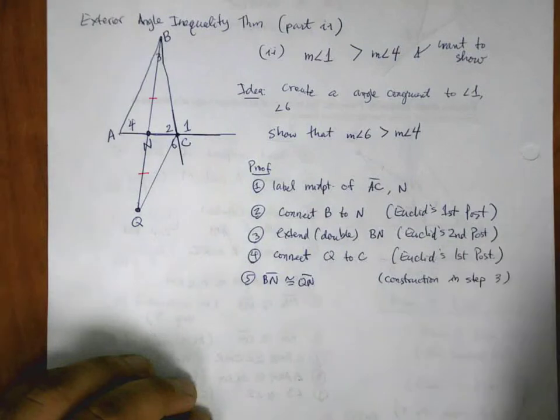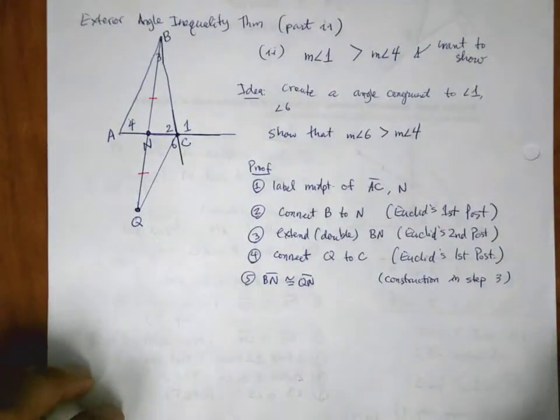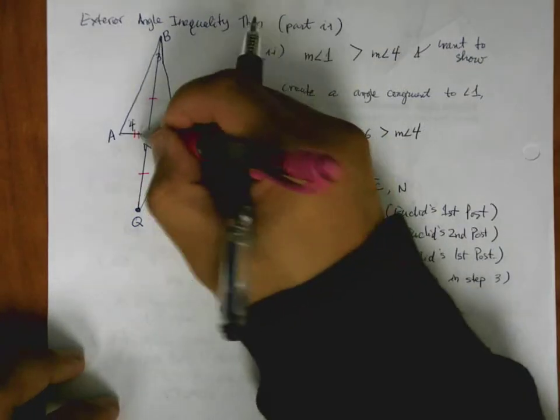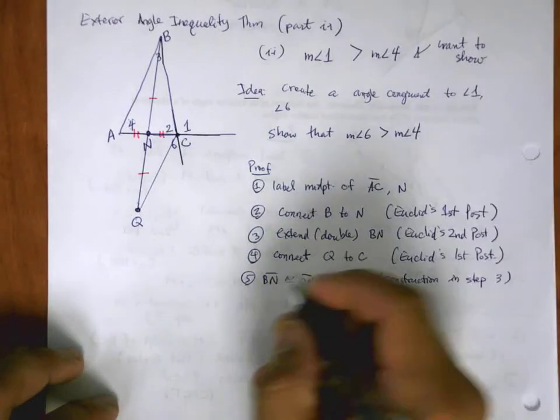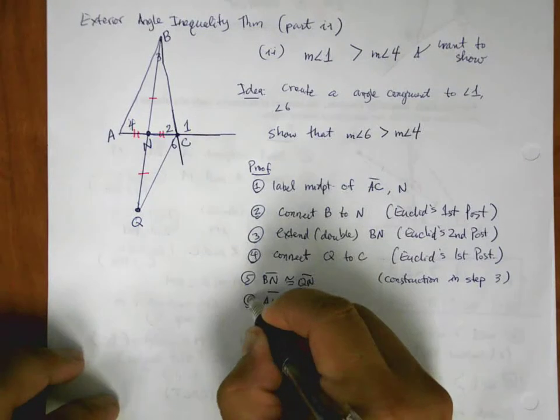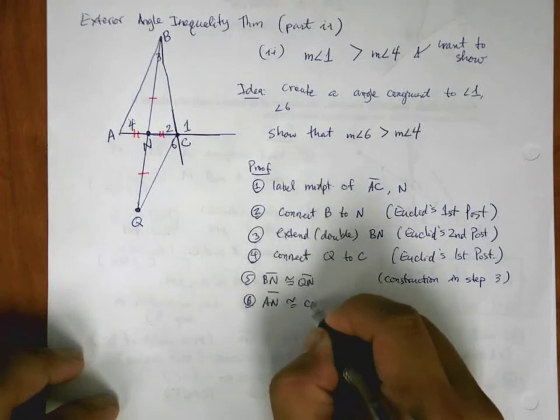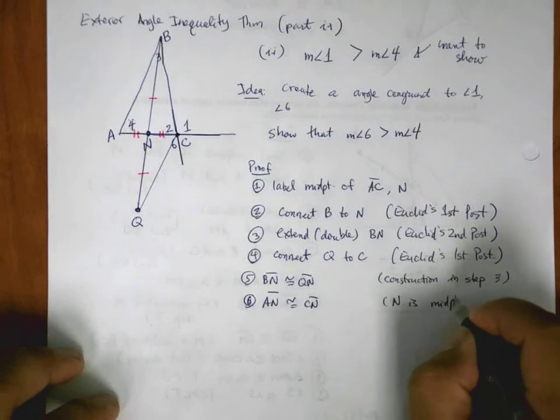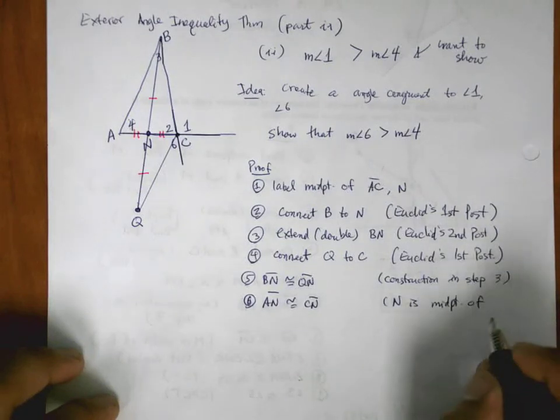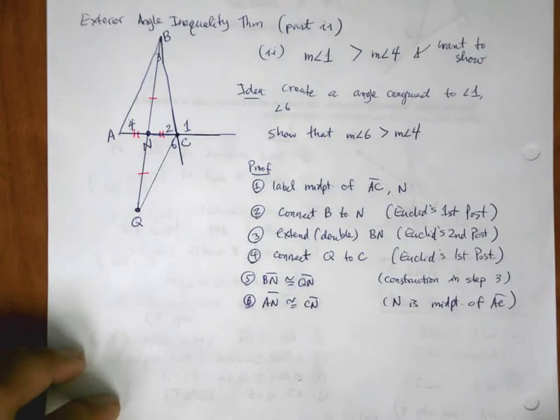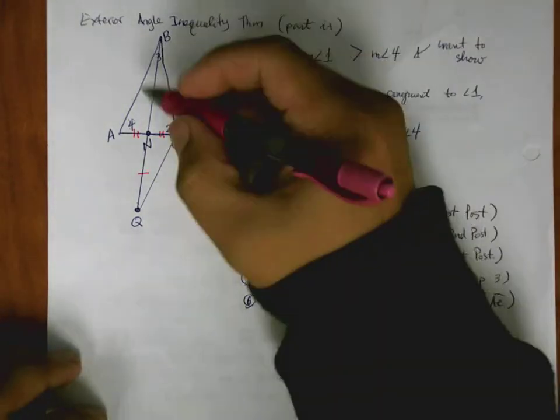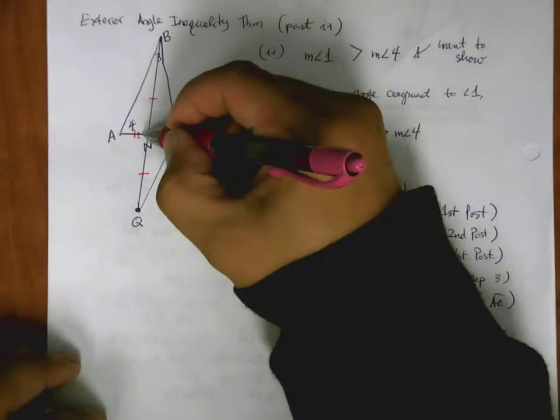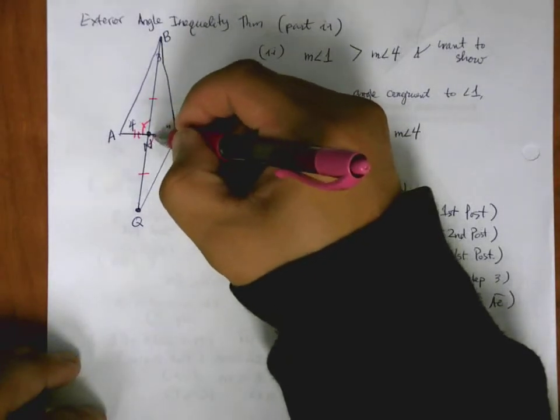So you can see this is very similar to what we had before. Then we can see that AN is congruent to CN. This is because N is the midpoint of AC. And finally, these two angles are congruent.